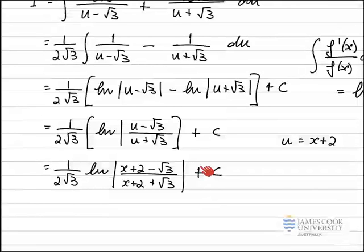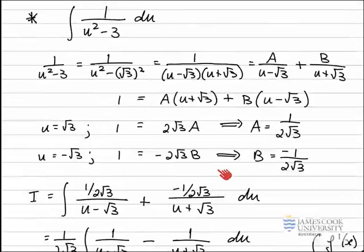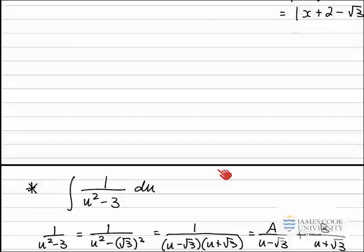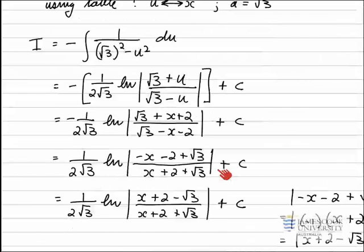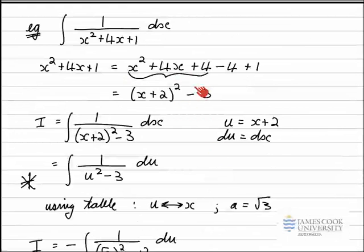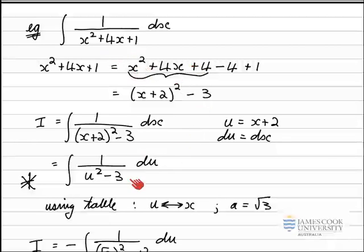Comparing that to the method using the table of integrals: both give exactly the same answer. x plus 2 minus root 3 over x plus 2 plus root 3 — it's the same answer. So we've demonstrated here that you can do an integral using two different methods — using the table of standard integrals and using partial fractions — and this all came from completing the squares at the start, which set up the integral, and then we looked at the two different methods.